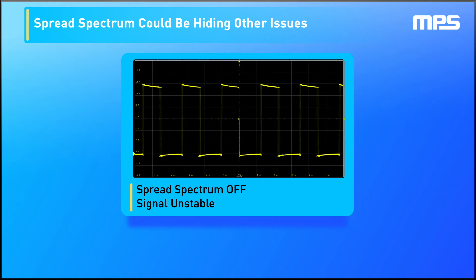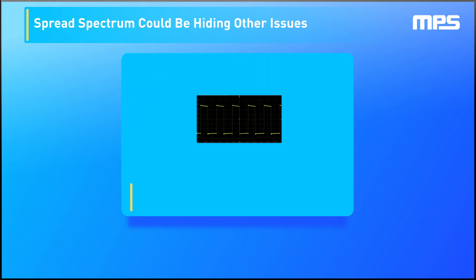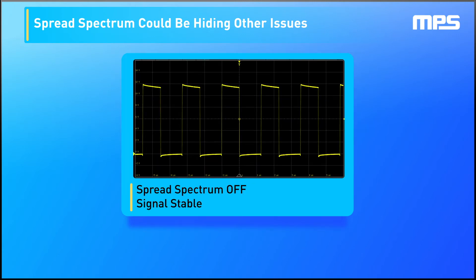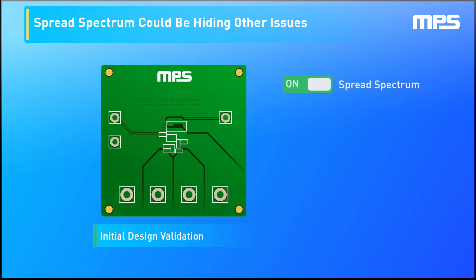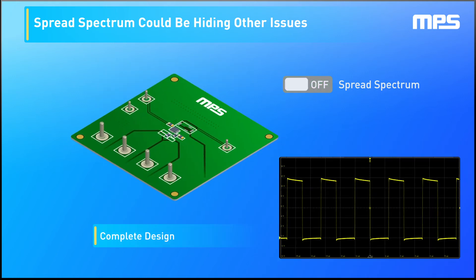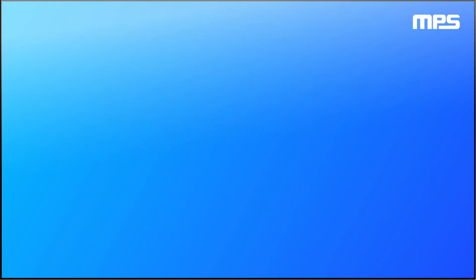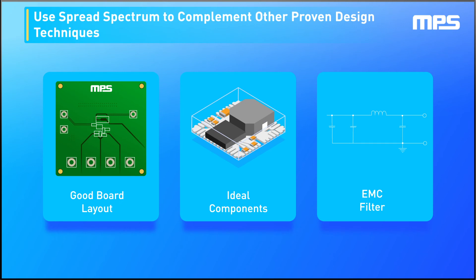It's important to note that spread spectrum can hide unwanted signal behavior, or the telling indicators that a design might have problems. Since the purpose of spread spectrum is to redistribute the concentrated energy, this can hide phenomena like jitter or stability issues. That's why we recommend that you always begin with the spread spectrum feature disabled, and make sure that your power supply has great stability.